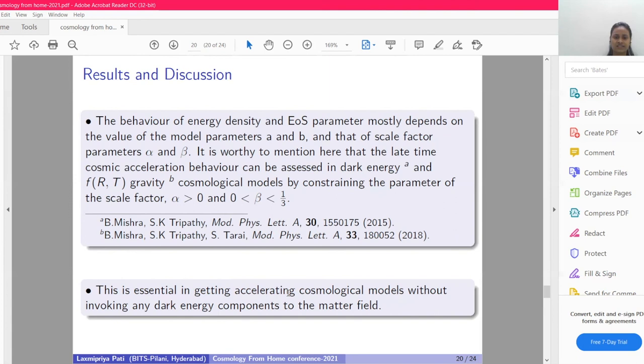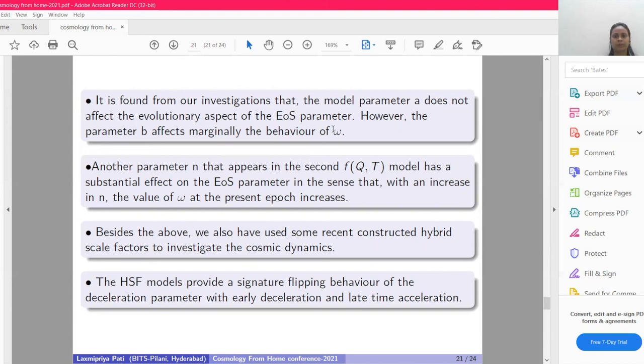This is essential in getting accelerating cosmological models without invoking any dark energy component to the matter field. Next, we found from our investigation that the model parameter a doesn't affect the evolution aspect of the EOS parameter, because in the EOS parameter the a term is absent. However, the parameter b affects marginally the behavior of ω. Another parameter n that appears in the second f(Q,T) model has substantial effects on the EOS parameter, in the sense that with an increase in n, the value of ω at the present epoch increases. Besides, we also have used some recent constructed hybrid scale factor to investigate the cosmic dynamics. The hybrid scale factor models provide a signature flipping behavior of the deceleration parameter with early deceleration and late time acceleration.